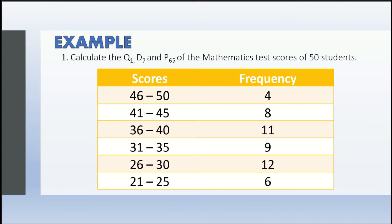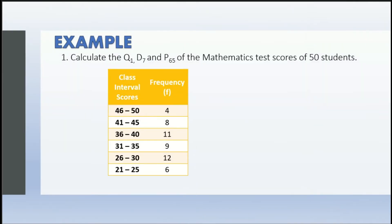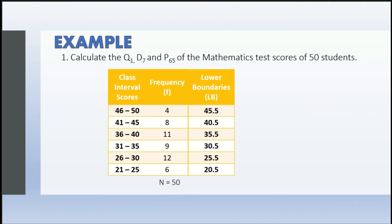Since we need much information for the given formulas, let's focus first on identifying them — like what is n, what is lb, and what is cumulative frequency. n is the total number of frequency; getting the total we have 50. For the lower boundaries, we subtract 0.5 from the smaller number in the class interval: 46 − 0.5 = 45.5, 41 − 0.5 = 40.5, 36 − 0.5 = 35.5, 31 − 0.5 = 30.5, 26 − 0.5 = 25.5.